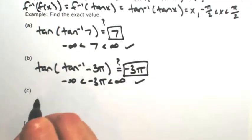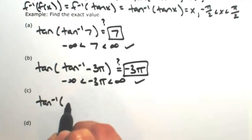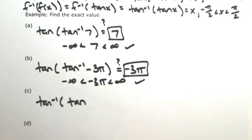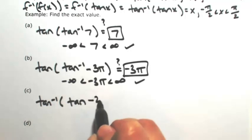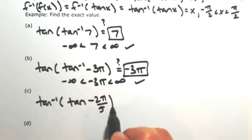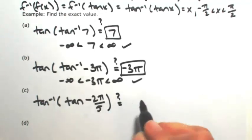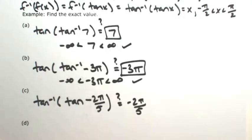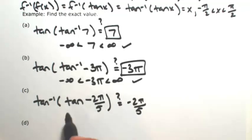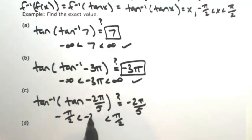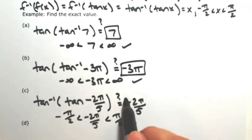Now let's look at the other composition with inverse tangent on the outside: the inverse tangent of tangent of negative 2 pi over 5. Maybe this equals negative 2 pi over 5 — let's check the domain restriction. The domain restriction on tangent is the angle restriction, which is negative pi over 2 to pi over 2. Since negative 2 pi over 5 is greater than negative pi over 2, this is satisfied and the answer is negative 2 pi over 5.